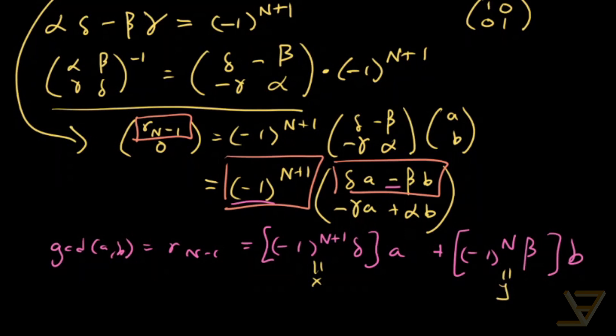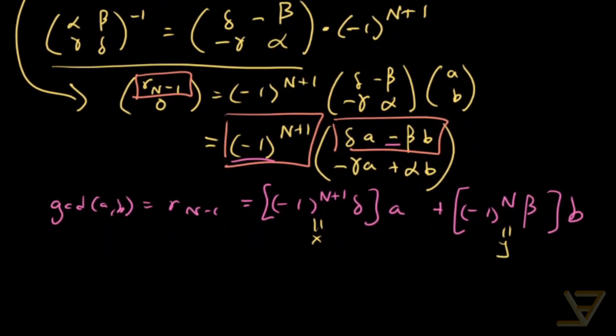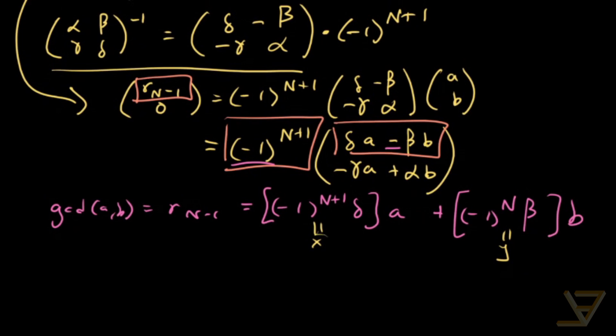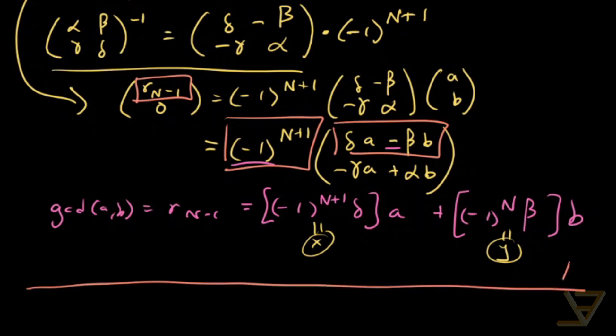Now, the last thing that I want to say is that usually there's a sequence of substitutions into equations that is used to find these Bézout coefficients x and y. But I find that this method of using matrices is more precise and it's just easier to remember as well. It's a very straightforward computation as opposed to a bunch of substitutions into equations. Thanks for watching and I'll see you next time.